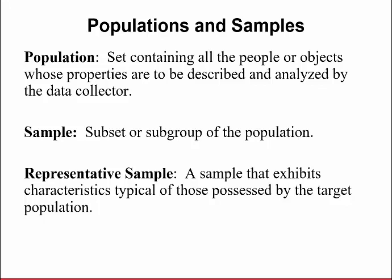In statistics you have two types of data. You can have a population data set or a sample data set. A population is a set containing all the people or objects whose properties are to be described and analyzed by the data. So think of the population as all the possible data values, complete information. Whereas a sample is a subset or subgroup of the population. So you might have the population of all people in the United States, and a sample might just be a small subset of people in a specific state. But in statistics what we're looking for is something called a representative sample.